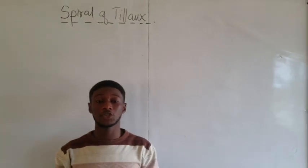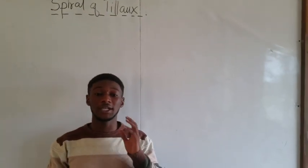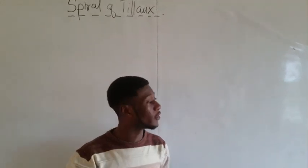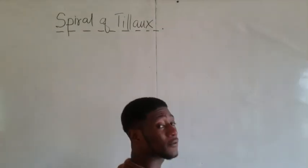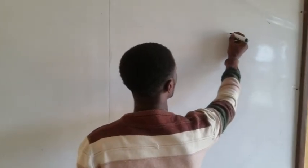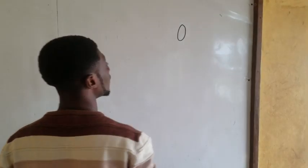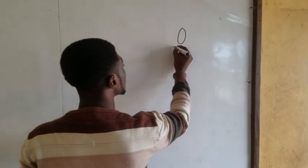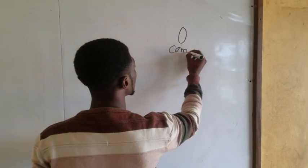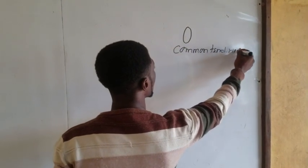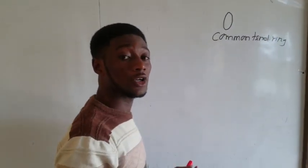If you take the rectus muscles, they originate from the common Tilaux ring. This ring is a ring of fibrous connective tissue. So we have the common Tilaux ring — we can also call it the annulus of Zinn.